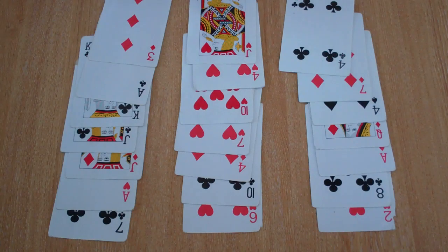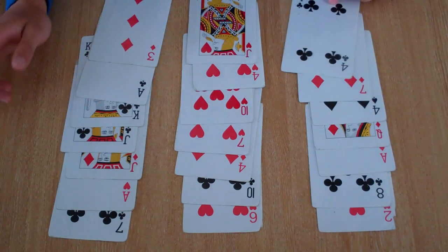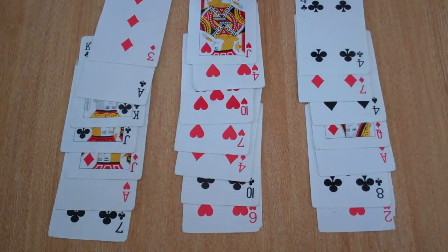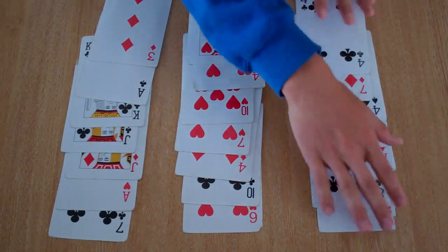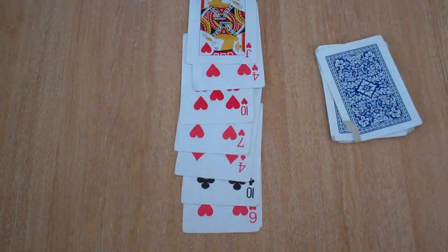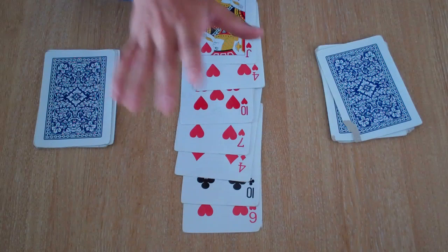And then, when the person chooses their card, any of these, say it's the ten of clubs, and then they say this column, I know it's not in any of these columns. And I know it's in this column.